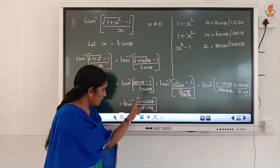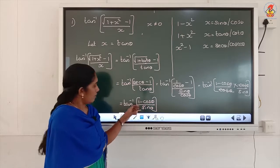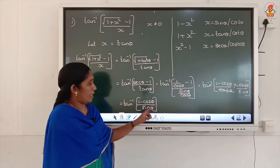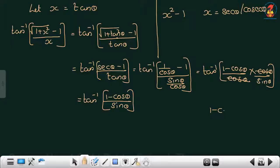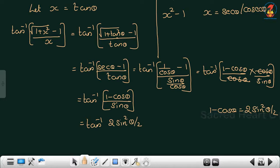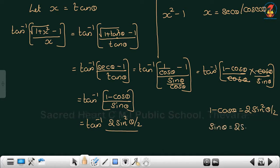Now outside is tan inverse, so we need to simplify further to convert this into tan. We use the result: 1 minus cosθ equals 2 sin²(θ/2). So the numerator becomes tan inverse of 2 sin²(θ/2). The angle is θ/2, but the denominator sinθ is not in terms of half angle, so we have to convert. We write sinθ as 2 sin(θ/2) cos(θ/2).